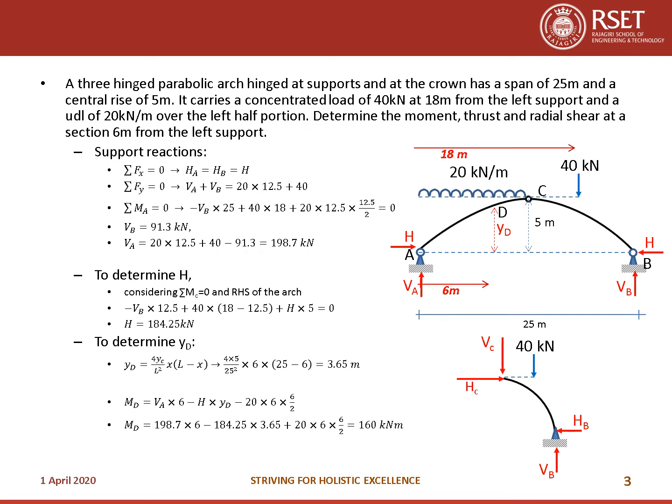To determine the rise YD at section D (6 m from left support), use the parabola equation: YD = (4YC/L²) × X(L − X) = (4 × 5/25²) × 6 × (25 − 6) = 3.65 meters.